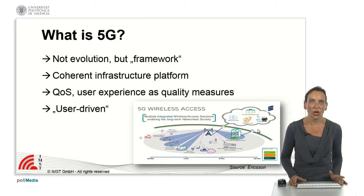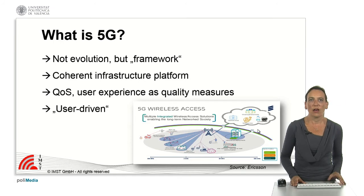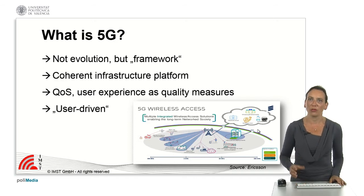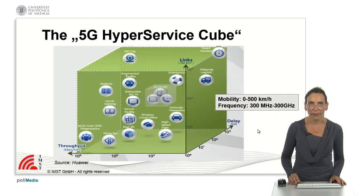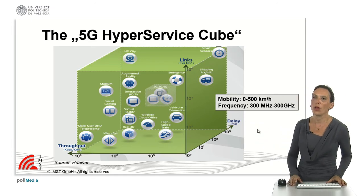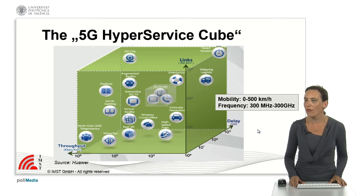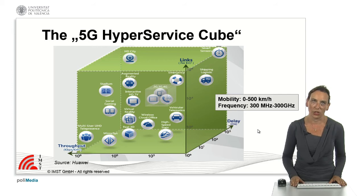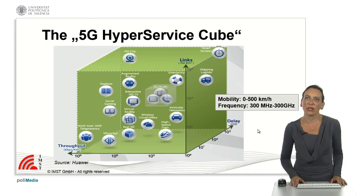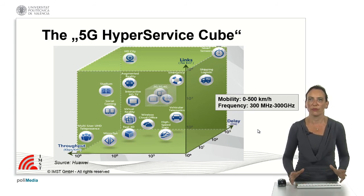With 5G we will no longer think about data rates alone as a measure of quality — instead we will talk about quality of service and user experience. The development of 5G will be user-driven, meaning applications will pop up and have to be integrated within this common framework. That's why some people have defined the 5G Hyperservice Cube, which includes nomadic, mobile, and fixed applications. Mobility will range from 0 to 500 km/h, and the spectrum will cover frequencies from 300 MHz up to the terahertz region — a large challenge for 5G infrastructure and antenna designers.